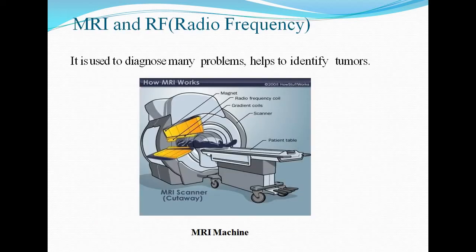MRI and RF or radio frequency. It is used to diagnose many problems and helps to identify tumors. MRI machine is used to produce images of soft tissues, fluid, fat and bone. It does this by producing a map which depends on the density of hydrogen in the body. The machine uses a strong superconducting magnet with a magnetic field strength.